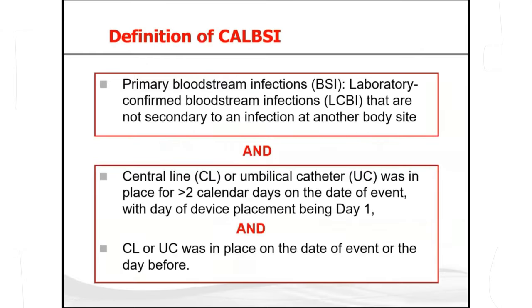The first one is CLABSI — central line-associated bloodstream infection. CLABSI is defined as a primary bloodstream infection, which means lab-confirmed. It is a lab-confirmed bloodstream infection that is not secondary to an infection at another site. So a positive blood culture cannot be a reflection of a urinary tract infection, pneumonia, or another infection. If the organism at the primary infection site and in the blood is similar, we will consider it secondary, not primary.